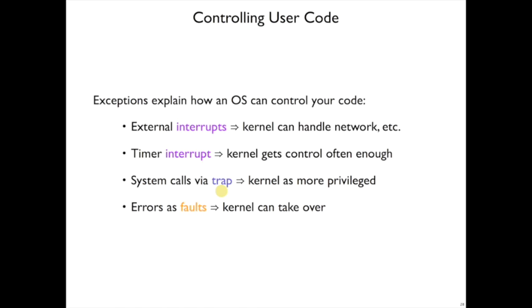System calls via trap explain how the code that you write is able to communicate with the operating system and get it to do privileged things on your behalf, as long as those things should be allowed. And finally, it explains how your whole computer doesn't fall over when you overwrite an array or attempt to reference some address that isn't supposed to be there - the kernel gets to take over and fix things up to keep the computer running.